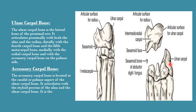Caudally, the ulnar carpal articulates with the accessory carpal bone, which is present just caudal to the ulnar carpal. Distally, the ulnar carpal articulates with the fourth carpal bone and the fifth metacarpal bone. So to summarize: the ulnar carpal articulates medially with radial carpal, proximally with both radius and ulna, distally with fourth carpal and fifth metacarpal, and caudally with the accessory carpal. The accessory carpal also articulates with the styloid process of the ulnar bone.